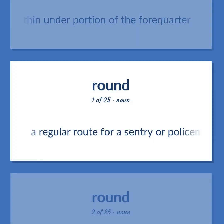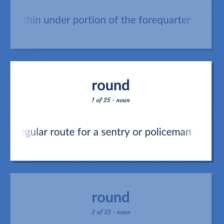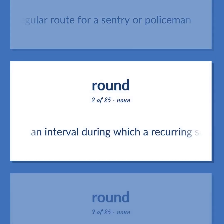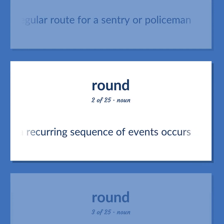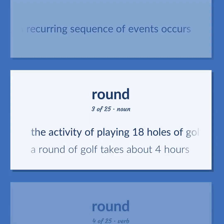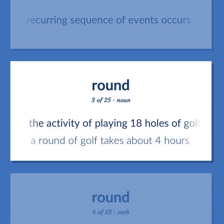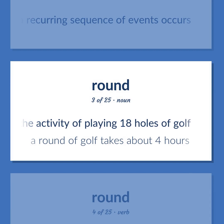Round: a regular route for a sentry or policeman. An interval during which a recurring sequence of events occurs. The activity of playing 18 holes of golf. Example: A round of golf takes about four hours.